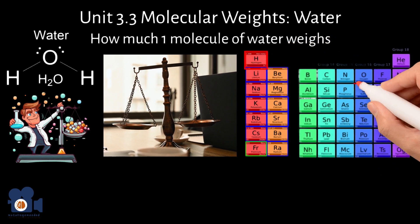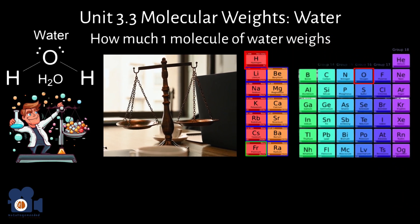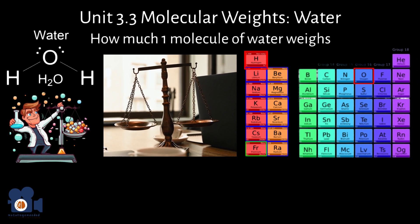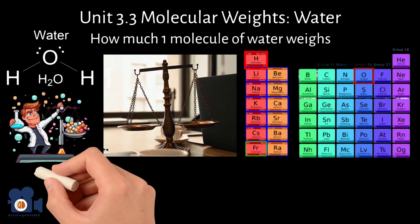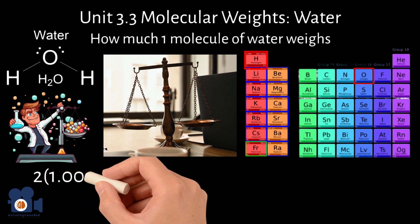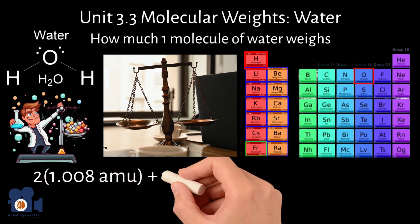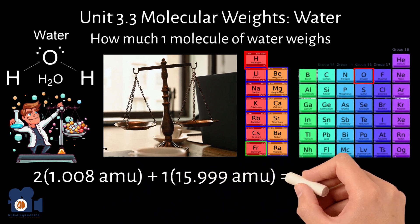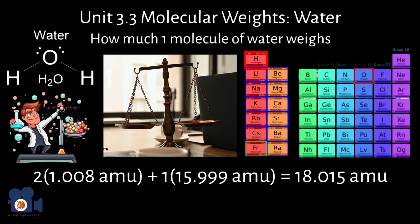For water, there is hydrogen and oxygen. Therefore, to calculate the molecular weight of water, we add up the AMUs for all the atoms. This looks like 2 times 1.008 AMUs plus 1 times 15.999 AMUs equals 18.015 AMUs.